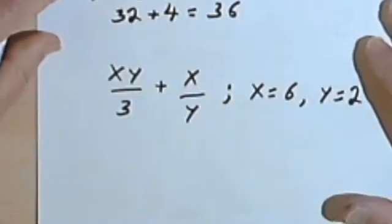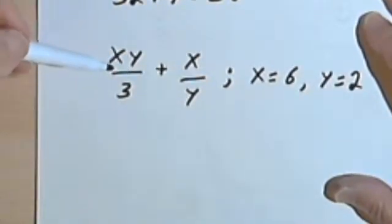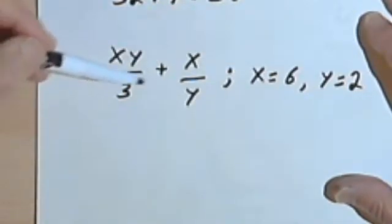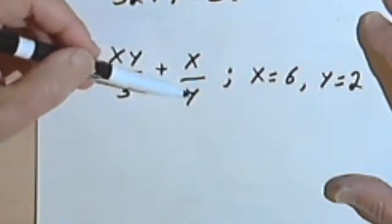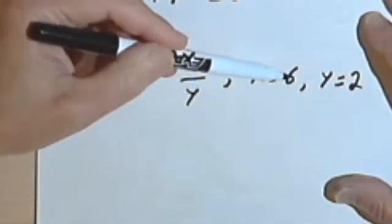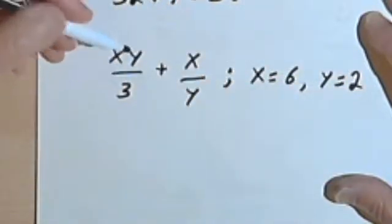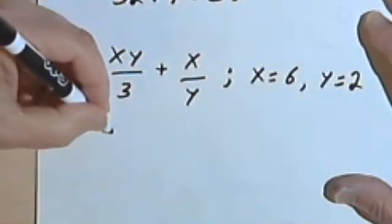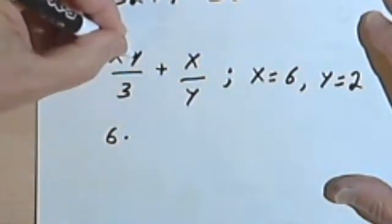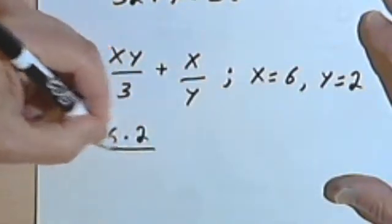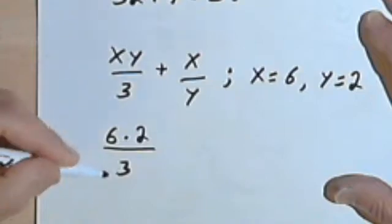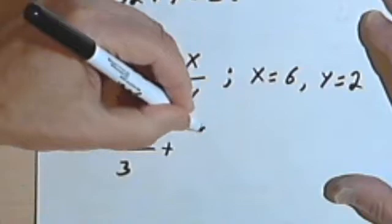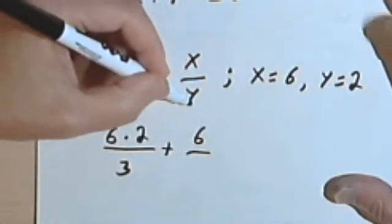One more. Here I've got two fractions: xy over 3 plus x over y, and I'm evaluating this when x equals 6 and y equals 2. So I'll plug in a 6 instead of the x, and instead of the y I've got a 2 — that's over 3 — and then once again, instead of the x I've got a 6, over y equals 2.